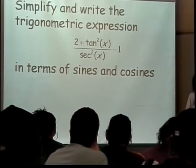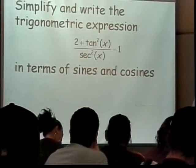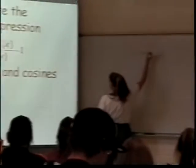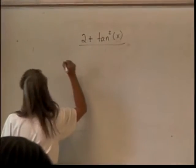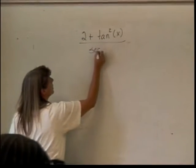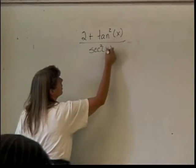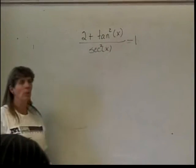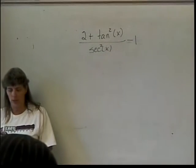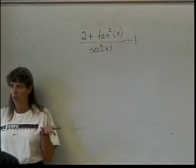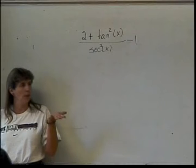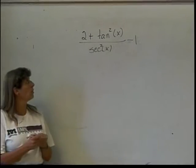I have the 2 plus the tangent squared of x over secant squared of x minus 1. If I'm rewriting it in terms of sines and cosines, what should I be getting rid of? I should change my tangent and I should be changing my secant. Alright, so let's do that.